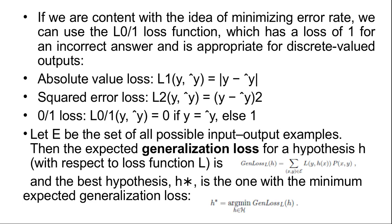Then the expected generalization loss for a hypothesis h with respect to loss function L is GenLoss_L(h) equals summation of L(y, h(x)) times probability P(x, y), where (x, y) belongs to E. And the best hypothesis h* is the one with the minimum expected generalization loss: h* equals argmin GenLoss_L(h), h belongs to H.